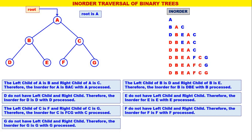You can observe all the nodes have become red, so the inorder traversal of this binary tree is over. The inorder for this binary tree is DBEAFCG.